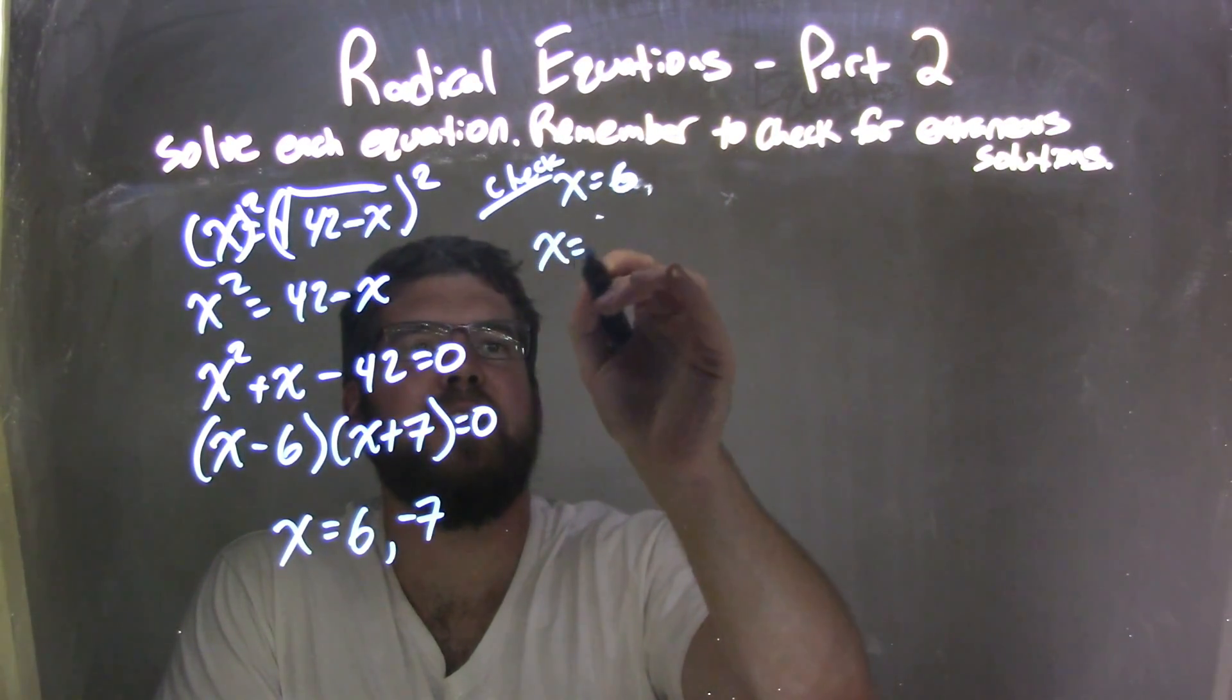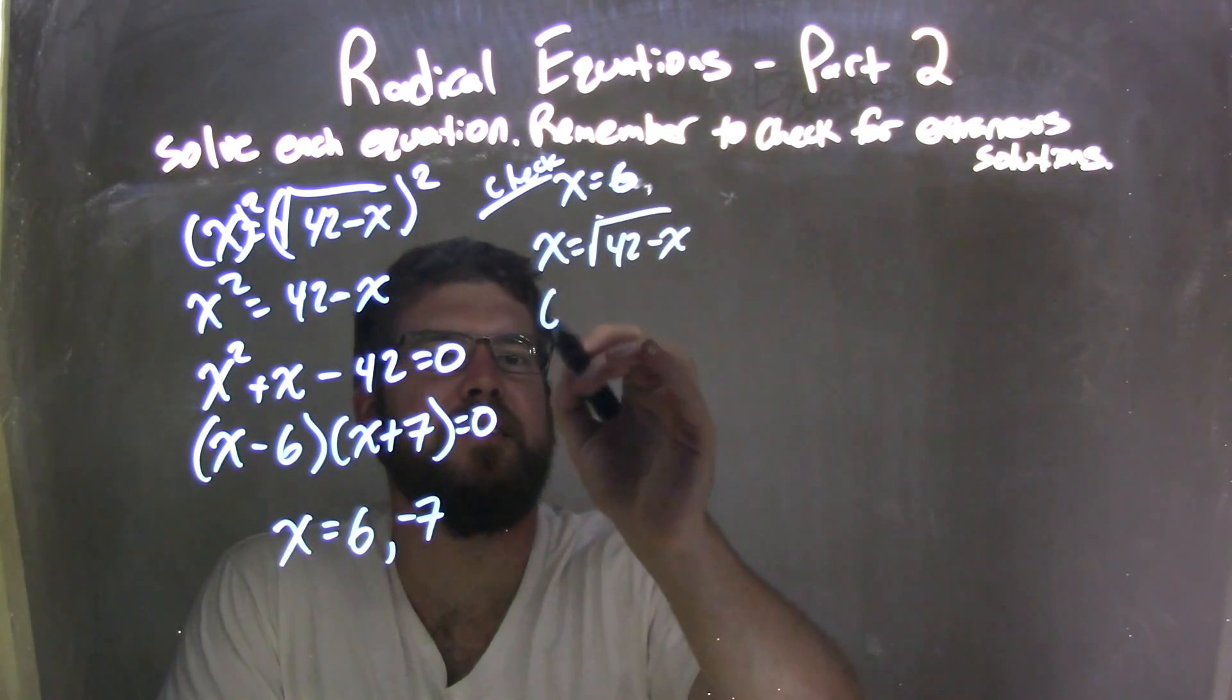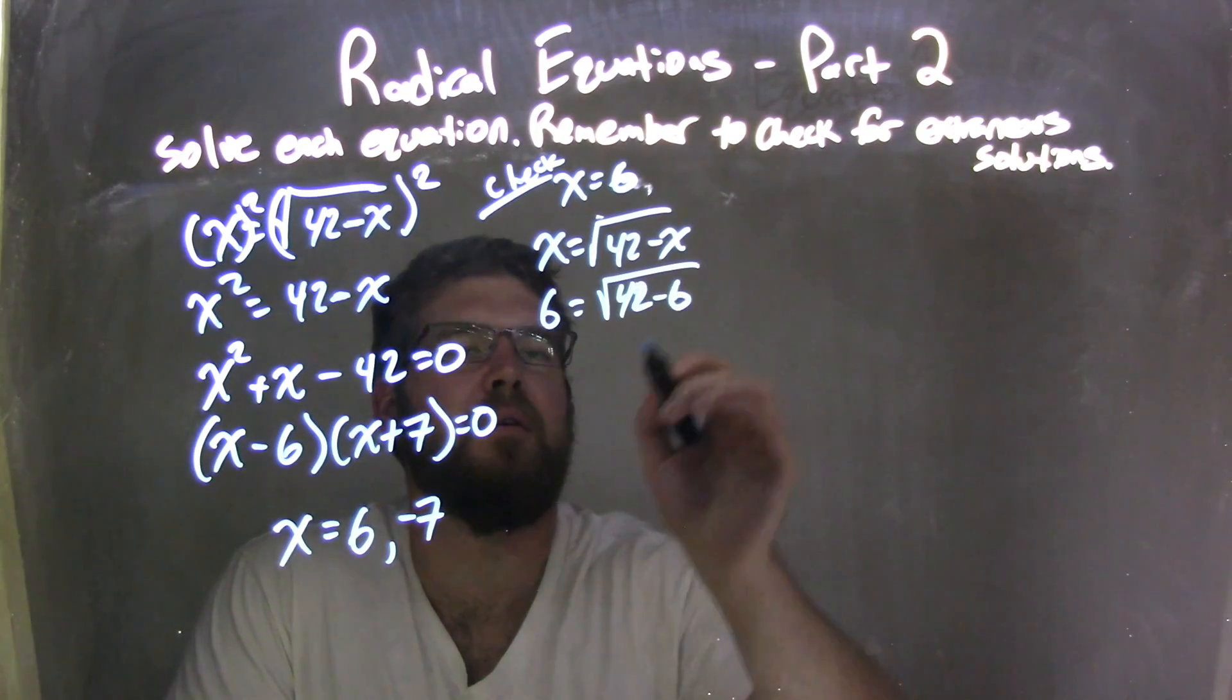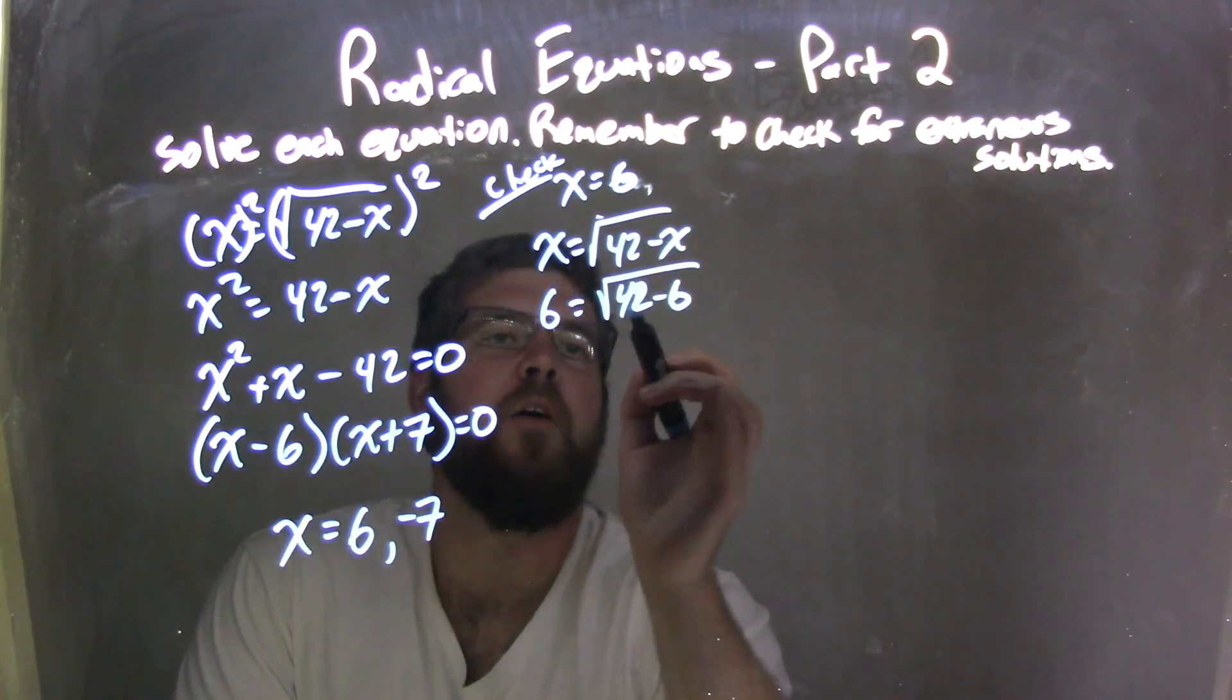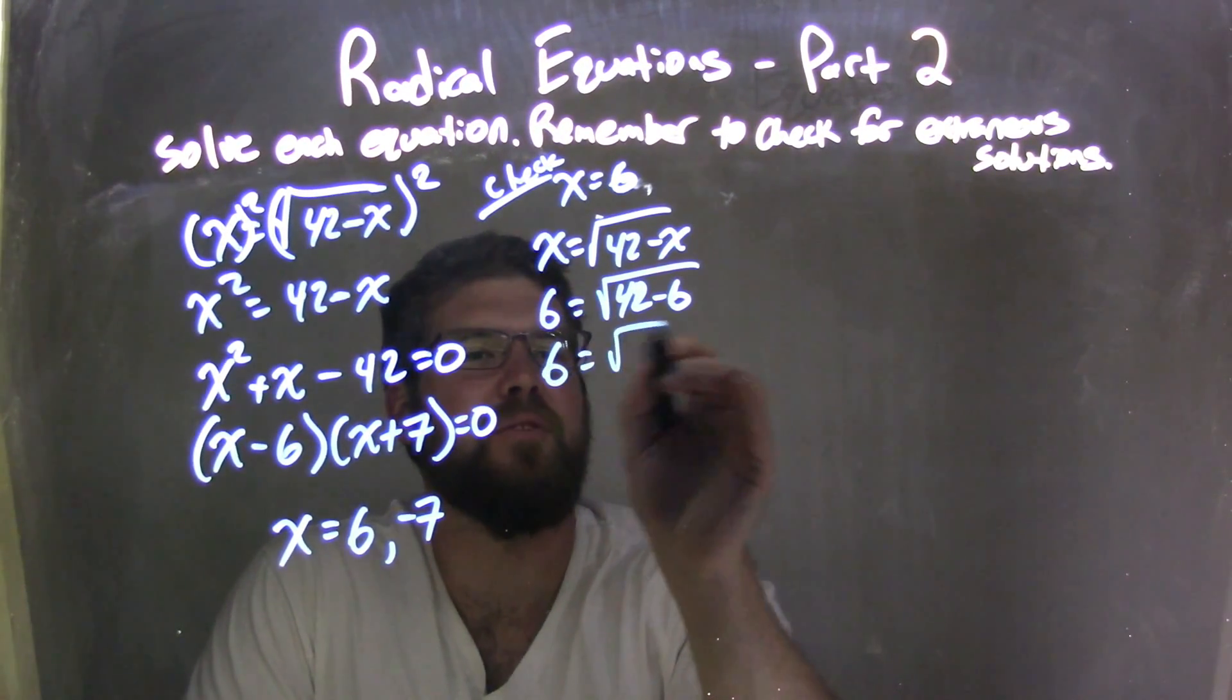We have x equals the square root of 42 minus x. I'm going to plug 6 in for both my x's. 42 minus 6 is 36. So I have 6 equals the square root of 36.